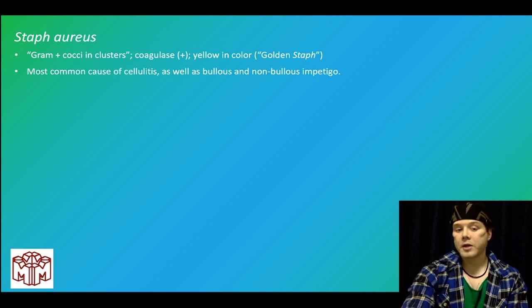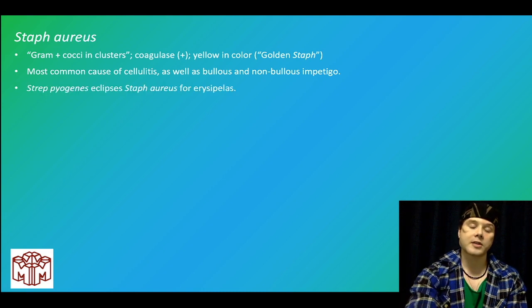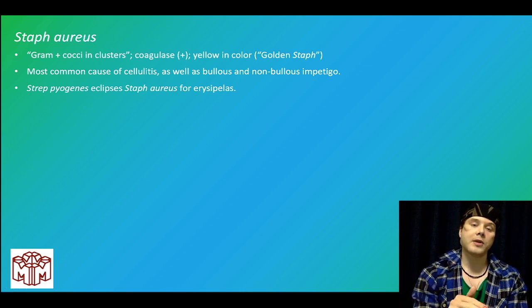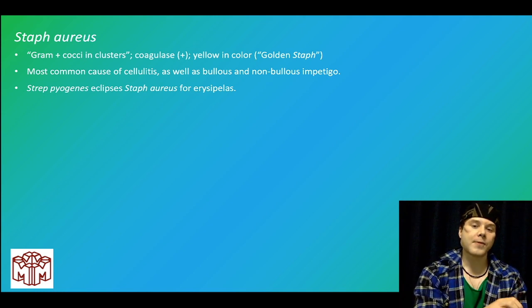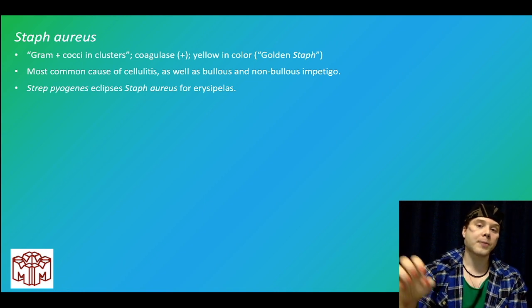Staph aureus is the most common cause of cellulitis and both bullous and non-bullous impetigo. Contrast this with strep pyogenes, which eclipses staph aureus for erysipelas. Cellulitis is inflammation of the dermis and hypodermis; erysipelas is inflammation and infection of the dermis and dermal lymphatics. Cellulitis tends to be more pink in color, while erysipelas is a fiery red. Erysipelas looks worse but cellulitis is actually deeper.